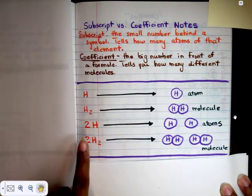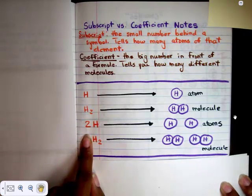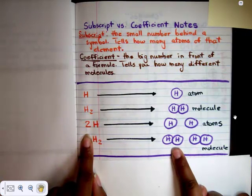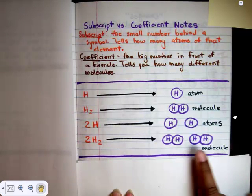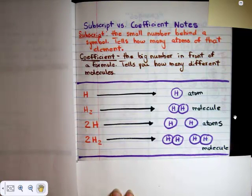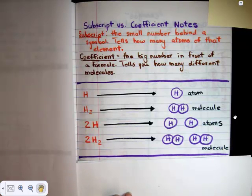If we move to the next one and cover up this two and draw H2, this lets you know you need two H2s. Basically, the coefficient in front tells you how many different molecules there are. If there's no coefficient, then it's all together as one.